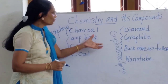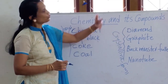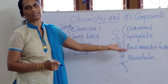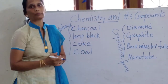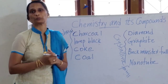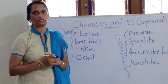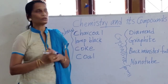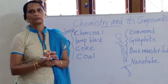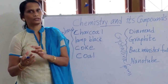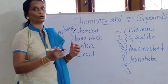The property of an element to exist in two or more physical forms with different physical properties is known as allotropy. This is a very important exam question — what is allotropy? Elements like carbon, phosphorus, and sulfur show the property of allotropy.